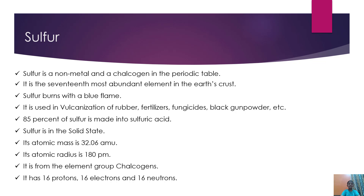Sulfur is in the solid state. Its atomic mass is 32.06 amu — that's atomic mass units. Its atomic radius is 180 picometers. It is from the element group chalcogens. It has 16 protons, 16 electrons, and 16 neutrons.